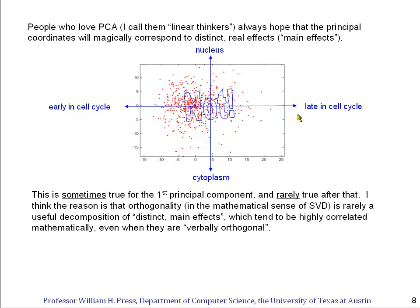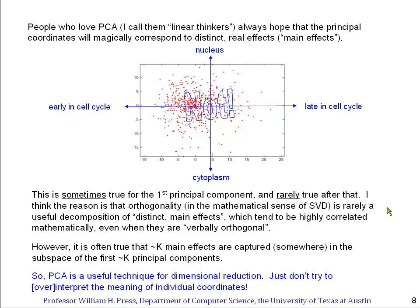The fact is that orthogonality, orthogonal effects are not the same thing as what we mean when we say verbally distinct main effects. In fact, distinct main effects will tend in general to be highly correlated mathematically. For example, it's a certain part in the cell cycle where most of the activity in the nucleus takes place. So if the coordinates really were as indicated in blue, the dots would not be uncorrelated like this. Correlated and uncorrelated mathematically is simply not the same concept as verbally orthogonal distinct main effects. And that's a potential source of confusion and misuse of singular value decomposition and principal component analysis.